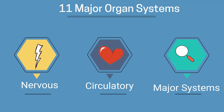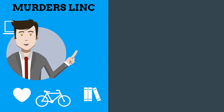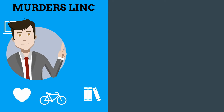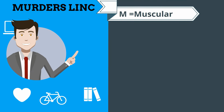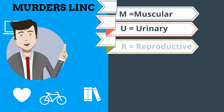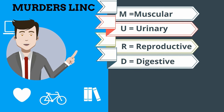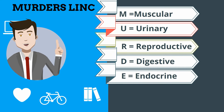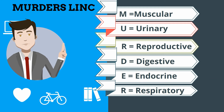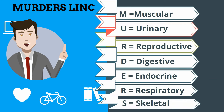The first mnemonic device you can use is MURDERS LINK. M is muscular, U is urinary, R is reproductive, D is digestive, E is endocrine, R is respiratory, and S is skeletal.